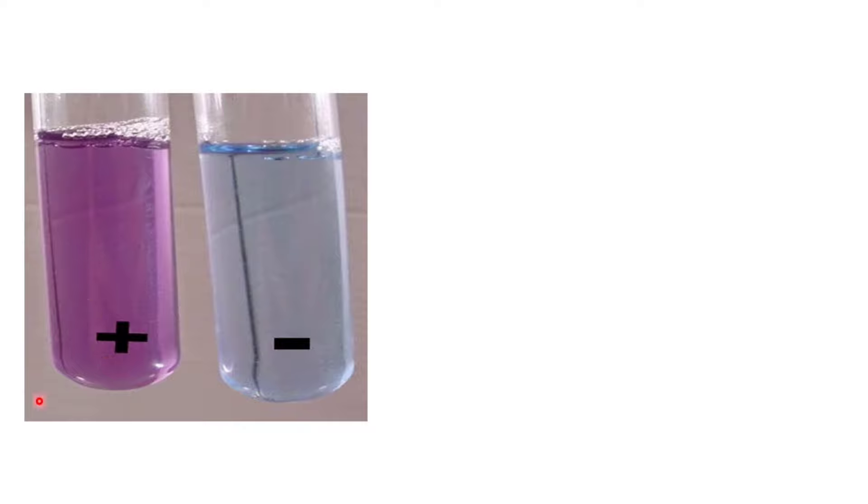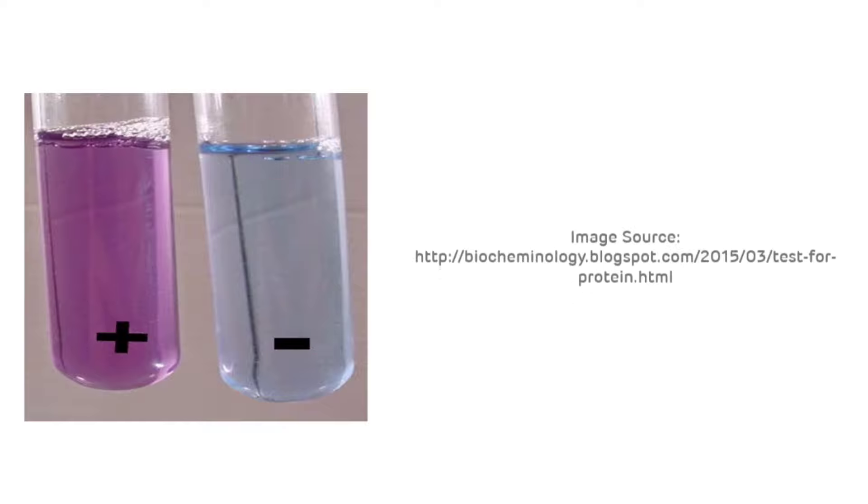This is about the procedure, observation, and inference of the Biuret test. The picture shows the interpretation: development of violet or purple color means the Biuret test is positive, indicating the presence of protein in the solution. If there is development of blue color, that means the Biuret test is negative, or it is the control test.